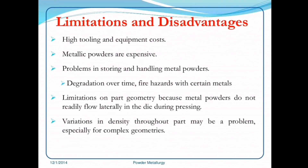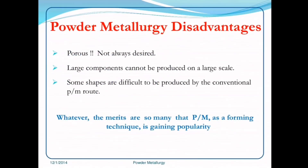Limitations and disadvantages: high tooling and equipment costs; metallic powders are expensive; problems in storing and handling metallic powders, including degradation over time and fire hazards with certain metals; limitations on part geometry because metal powders do not readily flow laterally in the die during pressing; variations in density throughout the part may be a problem, especially for complex geometries; porosity is not always desired; large components cannot be produced on a large scale; and some shapes are difficult to produce by the conventional powder metallurgy route. Despite these limitations, powder metallurgy as a forming technique is gaining popularity.